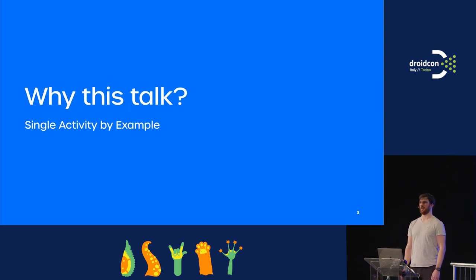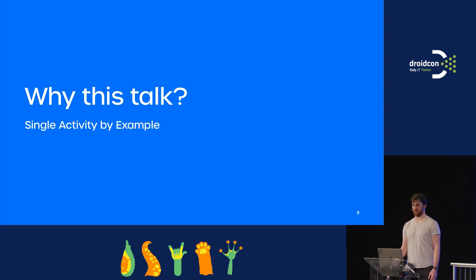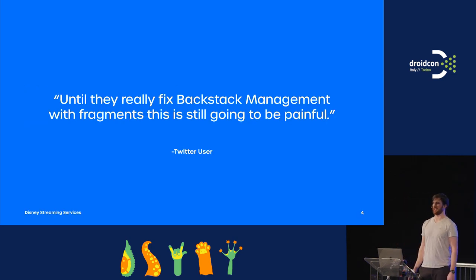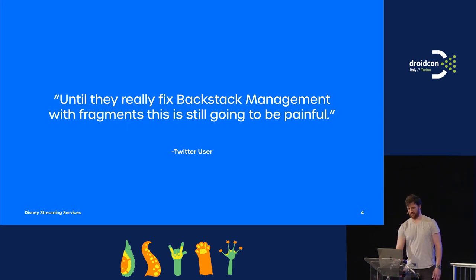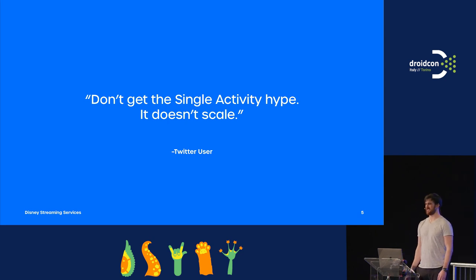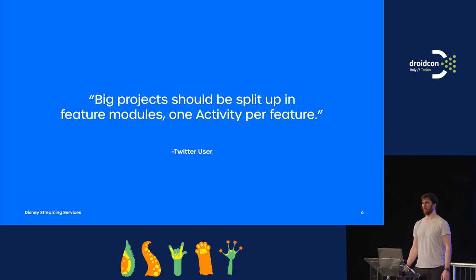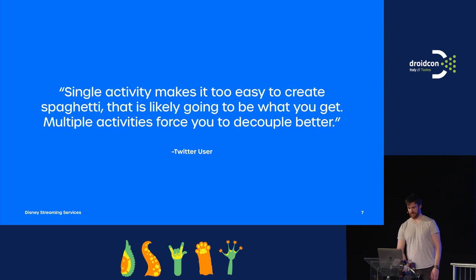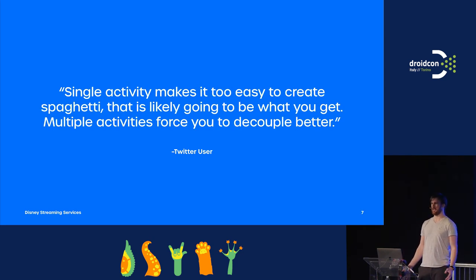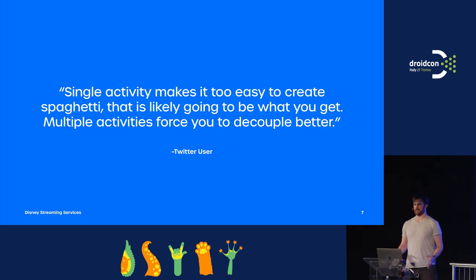So why this talk? It works out very well for us, but when I tweeted about this, the first response was that until they fix backstack management, this is still going to be very painful. Another example I found online was that Single Activity doesn't scale, people don't get the hype, and that big projects should be split up in multiple activities — one per feature. And last, that Single Activity often creates spaghetti code because your code is not decoupled correctly since it's all in one activity.